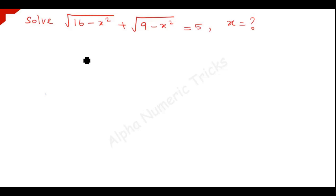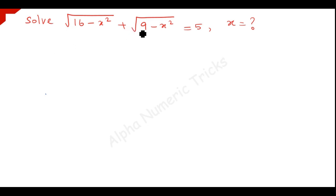Now we are going to solve this problem. Here, square root of 16 minus x squared plus square root of 9 minus x squared is equal to 5. We have to find out the possible values for x.